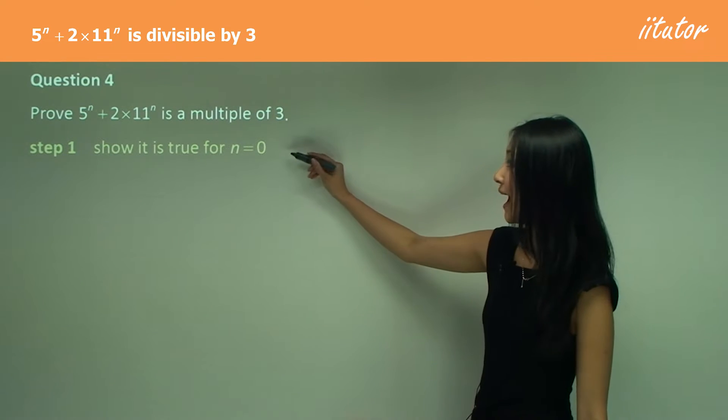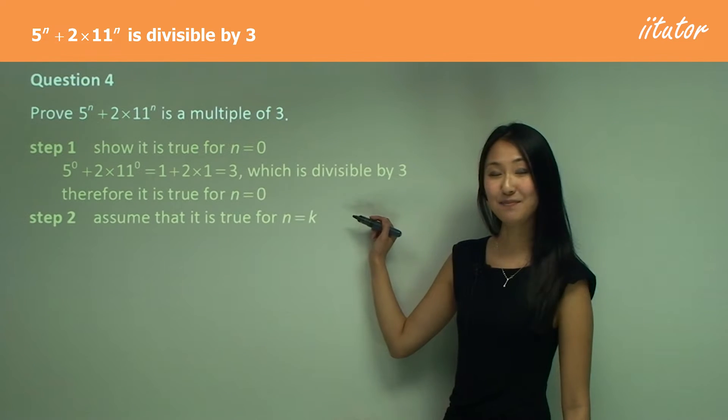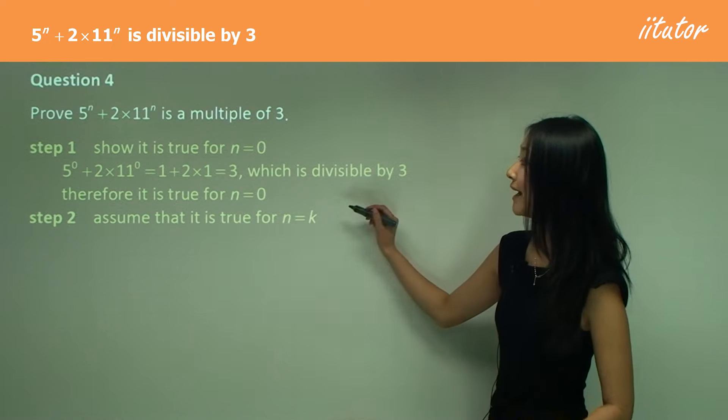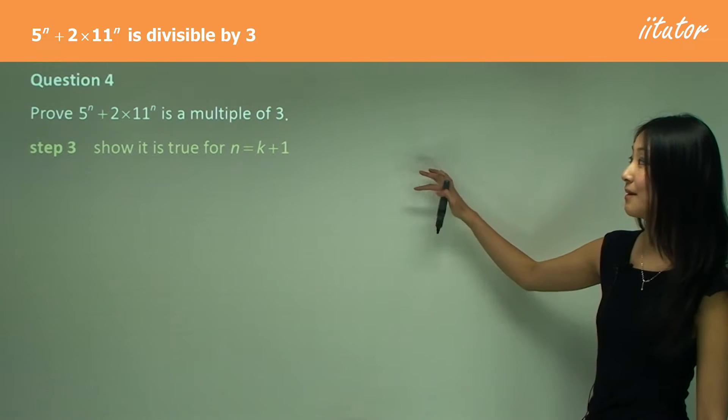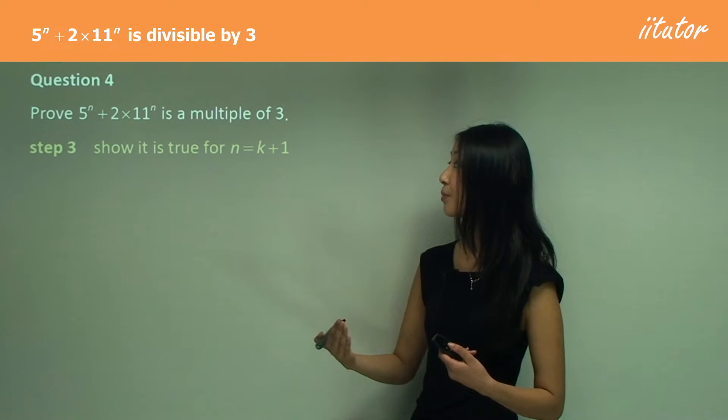So for step one, when we try n equals zero. Step two is our assumption where we write assume it is true for n equals k. We move on to step three, which is where we show or prove.